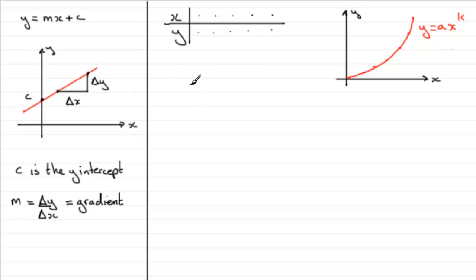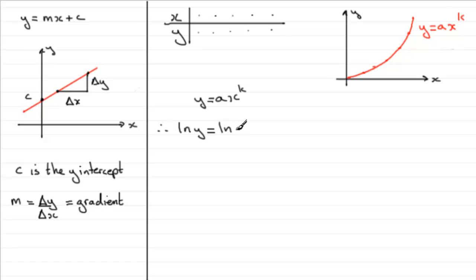All we do is take our equation y equals a times x to the power k, and take logs to both sides. It doesn't matter whether you use logs to base 10 or any other base — I'm going to take natural logs. So we have the natural log of y equals the natural log of a times x to the power k. Using the rule of logs, since we have a multiplied by x to the power k, this breaks down to the natural log of a plus the natural log of x to the power k.